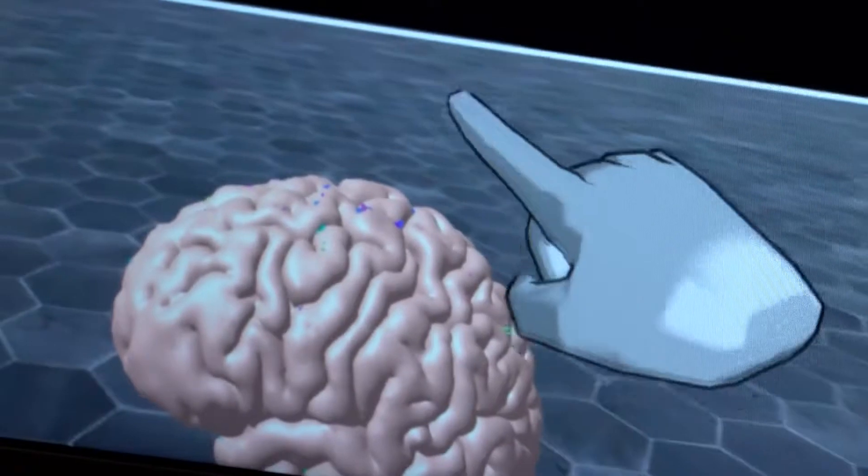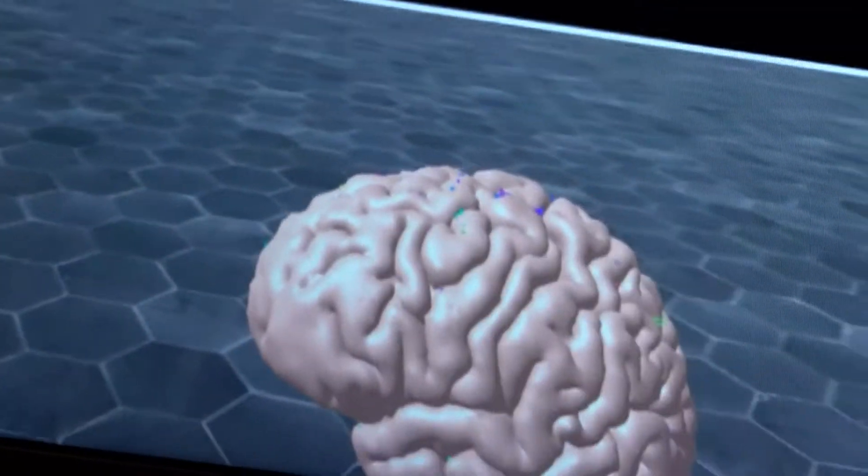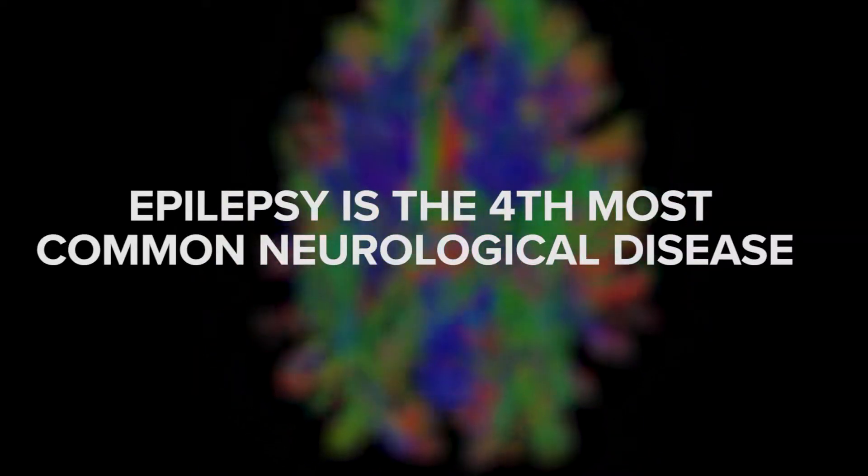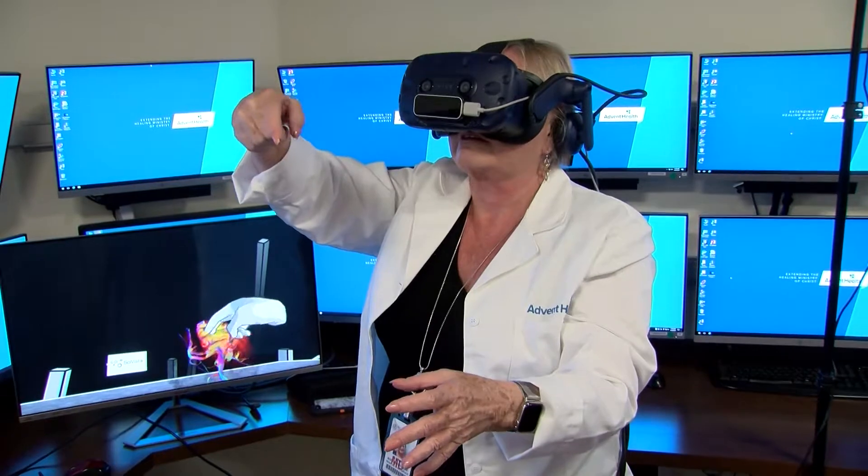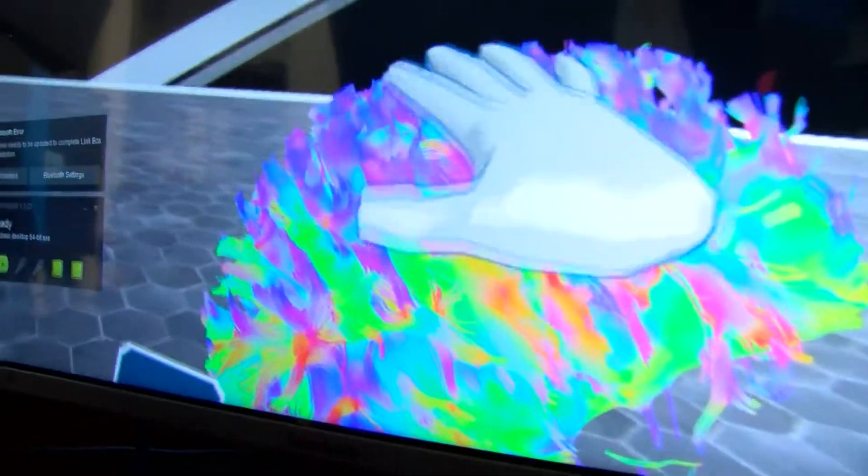That way we can show the patient where their seizures are coming from instead of saying 'I don't know, it's just a bunch of squiggly lines.' They have an actual picture. We'll be able to see it either when it's being recorded or after the fact and be able to play it over again, view it, and make hypotheses about what this means for surgical treatment.